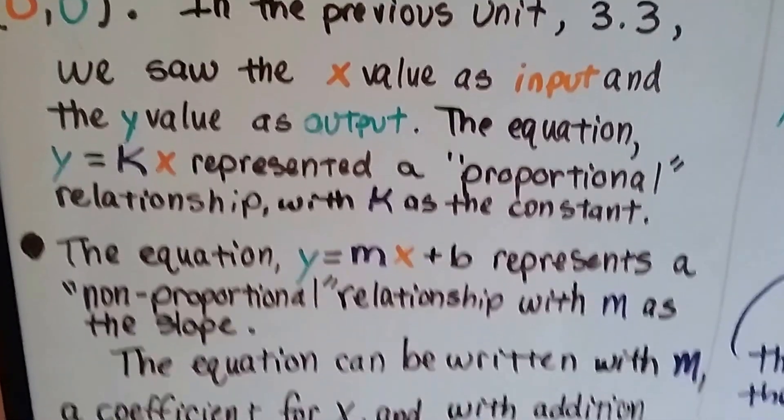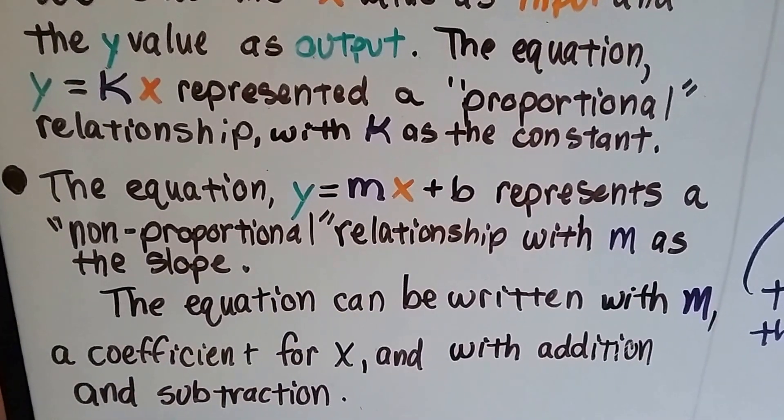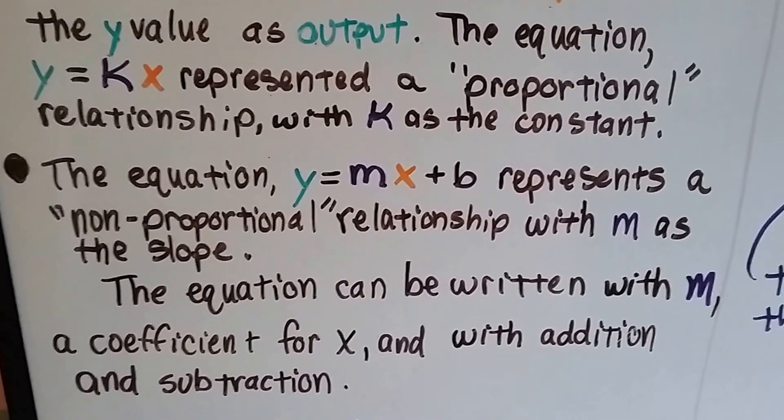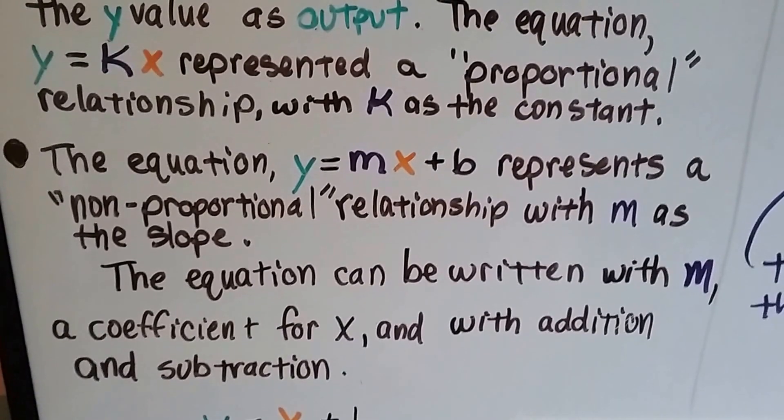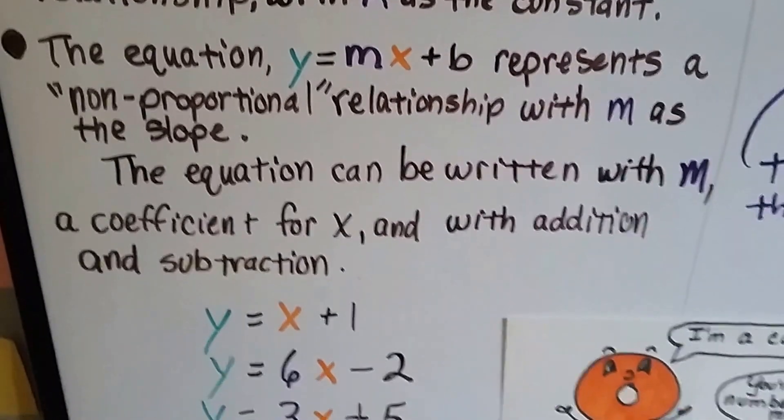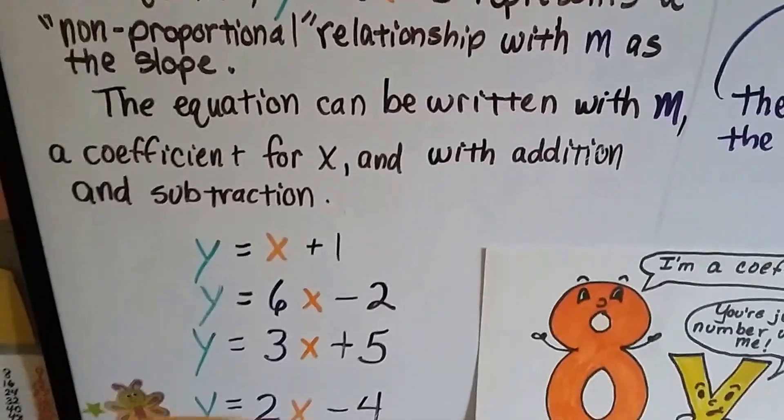Now the equation y equals mx plus b represents a non-proportional relationship with m as the slope. So remember the slope formula? The equation can be written with m, a coefficient for x, and with addition and subtraction.